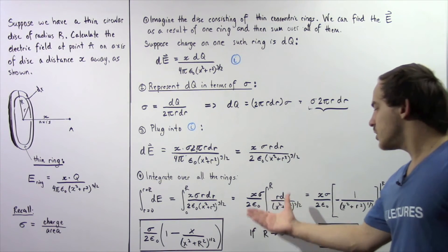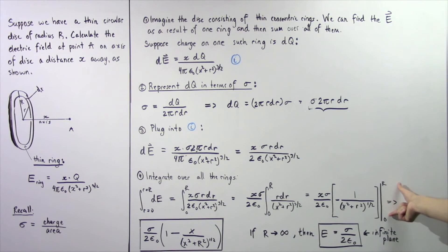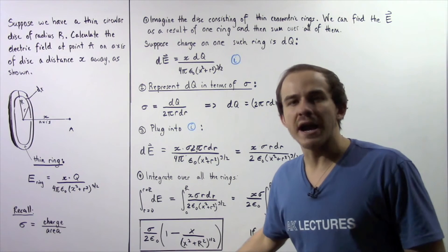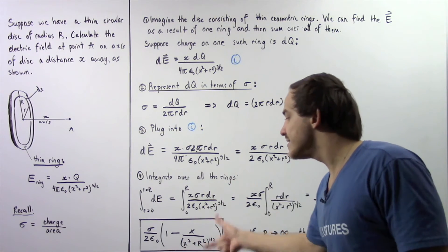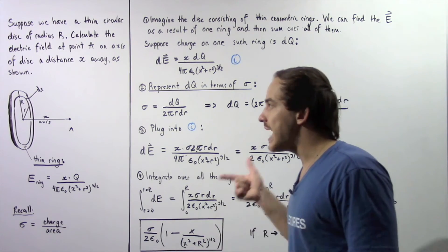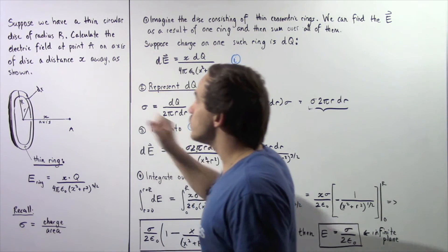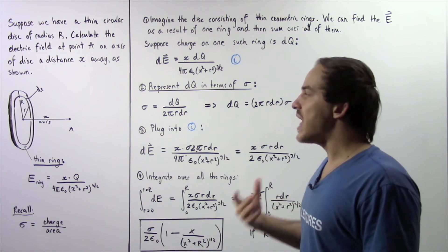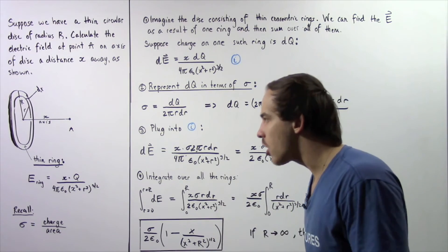Now if we actually integrate, we get the following result. And if we evaluate this integral, this would be our final equation. So this is our electric field at point A as a result of a thin uniform disk that has a continuous charge.